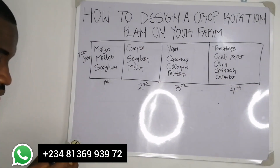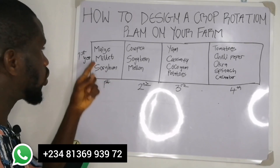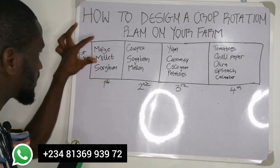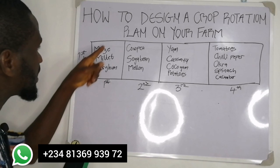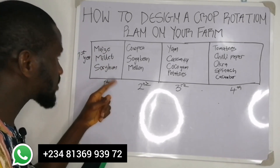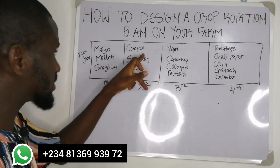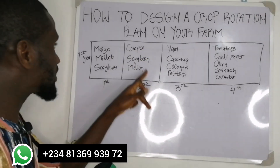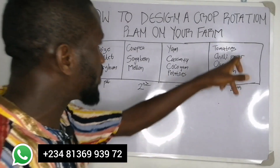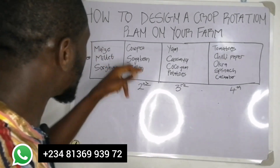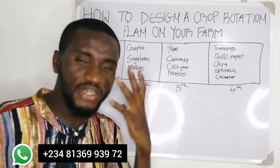The pests and diseases that attack maize, millet, or sorghum — they are in the same family, they share the same pests and diseases, and most likely they have the same nutrient requirements. So the pests that will attack the cereal group will not be the pests that will attack the legumes, or the root crops, or the vegetables. But within the same family, they share the same pests and the same nutrient requirements.